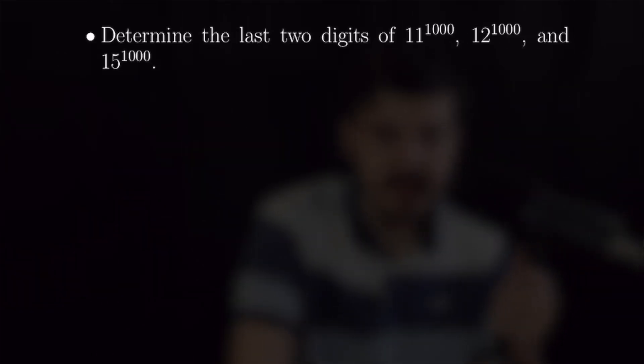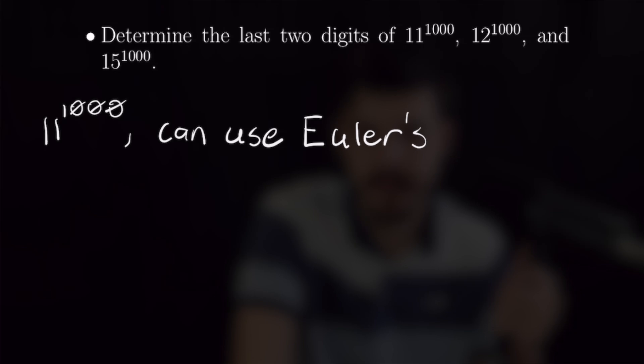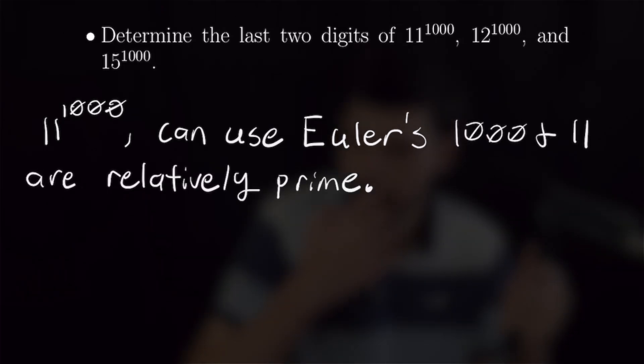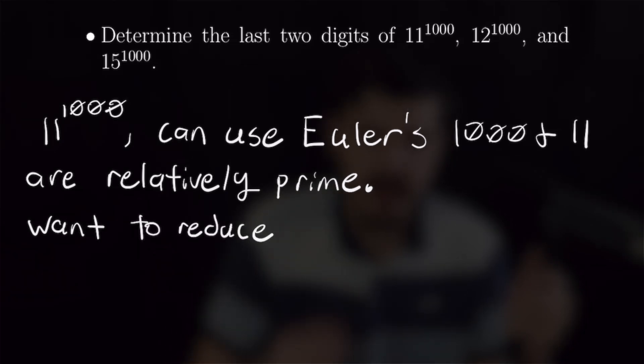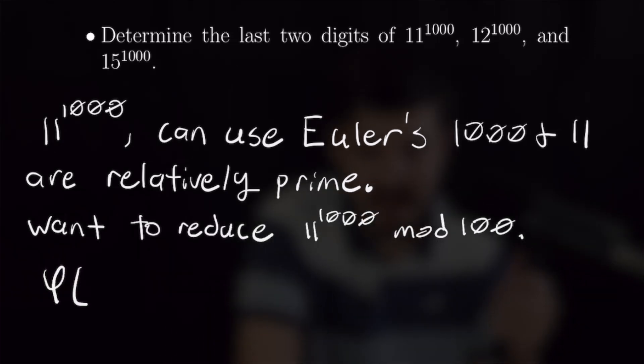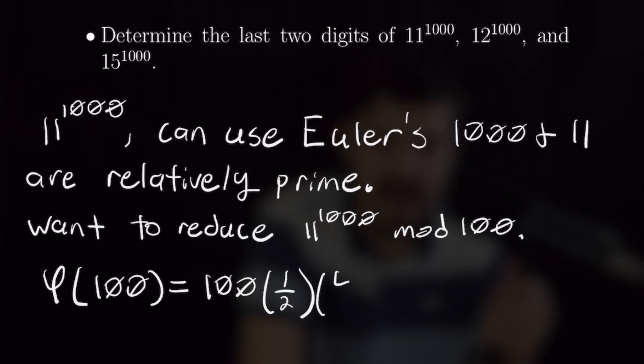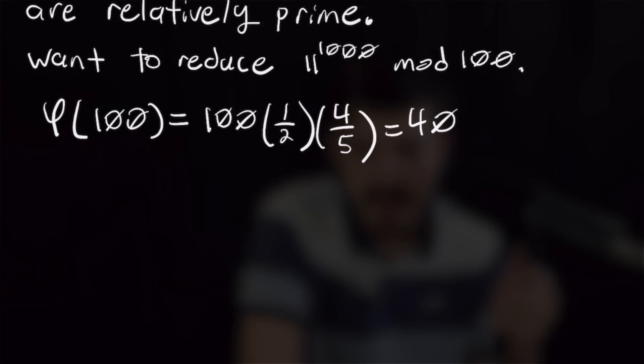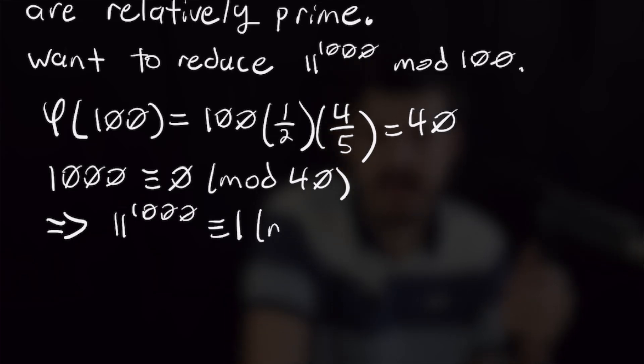For our last problem, we're going to want to determine the last two digits of 11, 12, and 15 to the 1000th power. Now for 11 to the 1000th, we can use Euler's as 1000 and 11 are relatively prime. We want to reduce 11 to the 1000 mod 100 to get the last two digits. So phi of 100 is going to be equal to 100 times one half times four fifths, and that is equal to 40. And we know that 1000 is congruent to zero mod 40. And that means that 11 to the 1000th must be congruent to one mod 100, which very quickly finishes that one off.